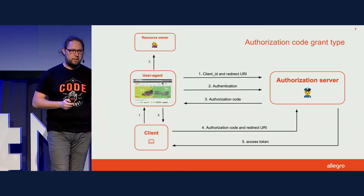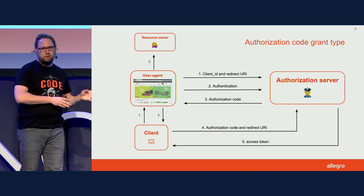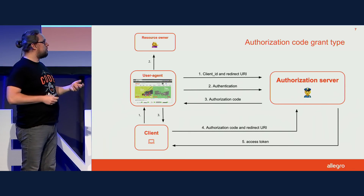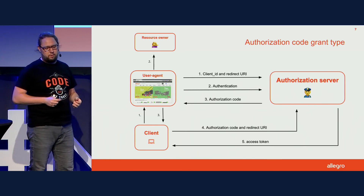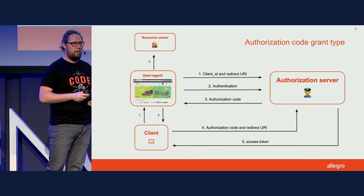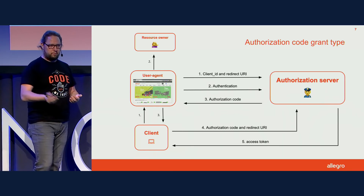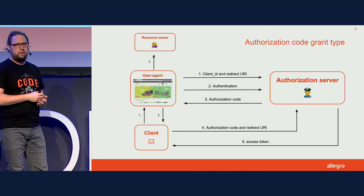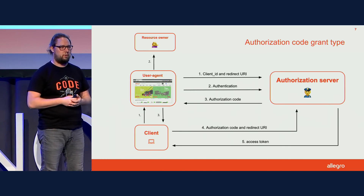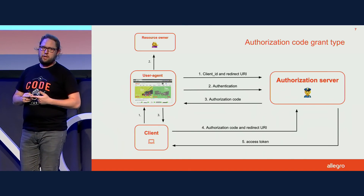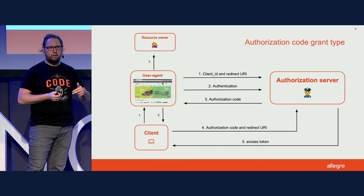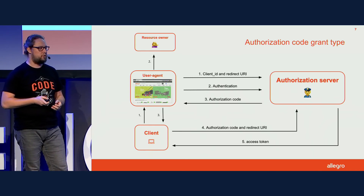Let's start with the device code grant type, but first let's step back and have a quick look at how the original authorization code grant type works. We have the client on the left — when it initializes the authorization flow, it does so through the user agent, the browser. The user passes authorization, the authorization server sends back the authorization code through a redirect URI to the browser and back to the client, which can then exchange the code for an access token. Two important points: the client needs access to a user agent, and it needs to be able to receive the redirect response to get the authorization code.